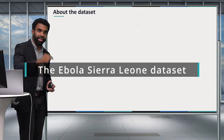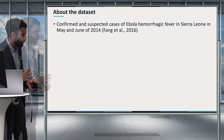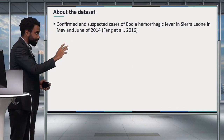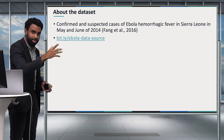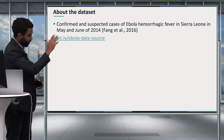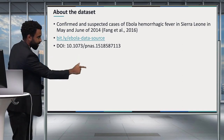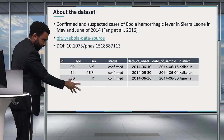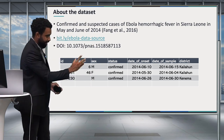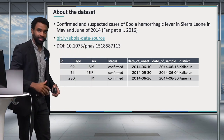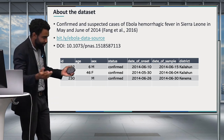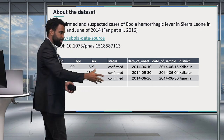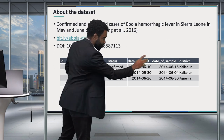Most of this lesson will focus on a single dataset — the 2014 to 2016 West African Ebola outbreak. If you want to learn more, go to bit.ly/ebola-data-source to read the source paper. A quick preview: you have an age column, sex, status (confirmed or suspected), date of onset (when symptoms started), date of sample (when a test sample was taken), and district.